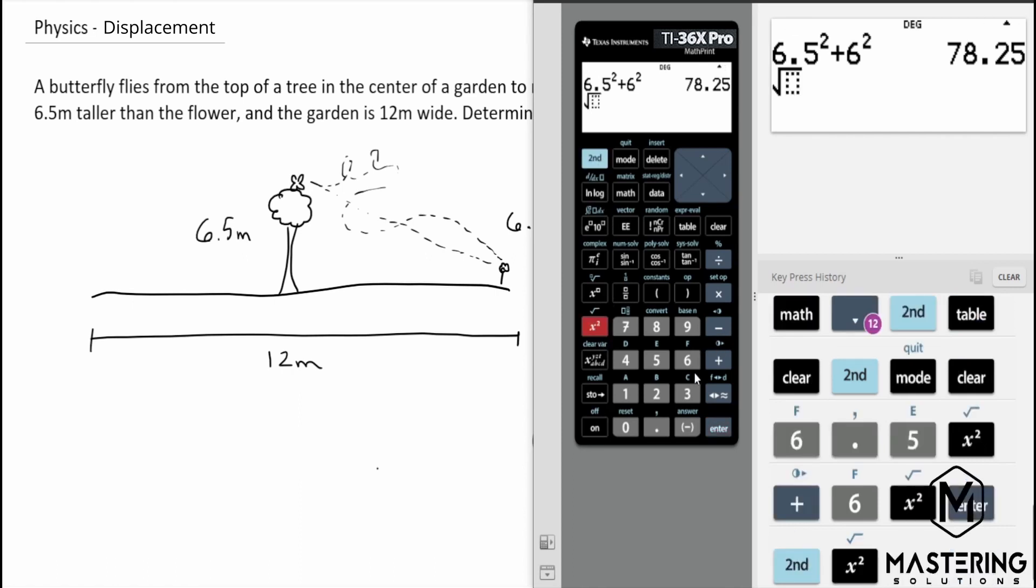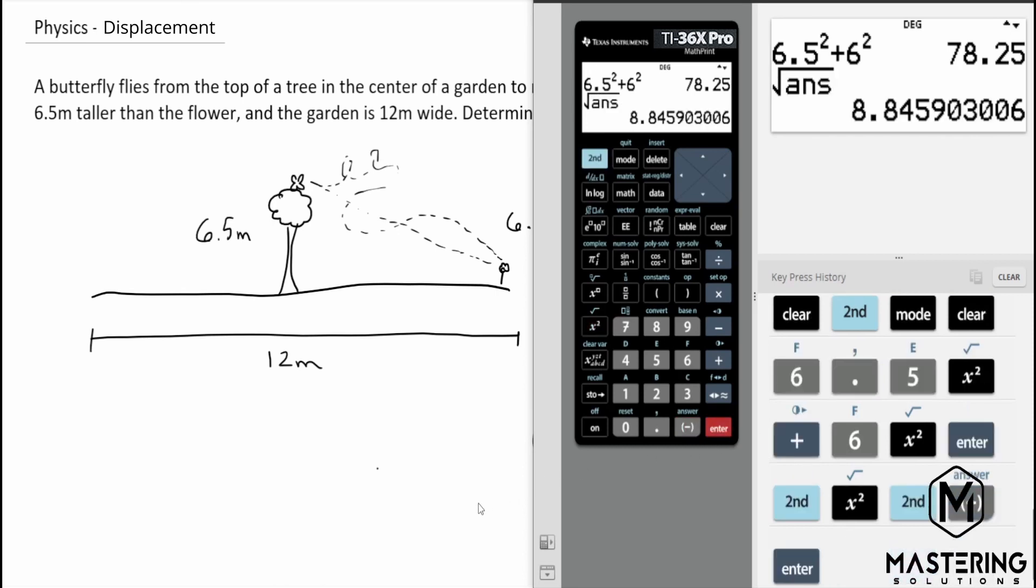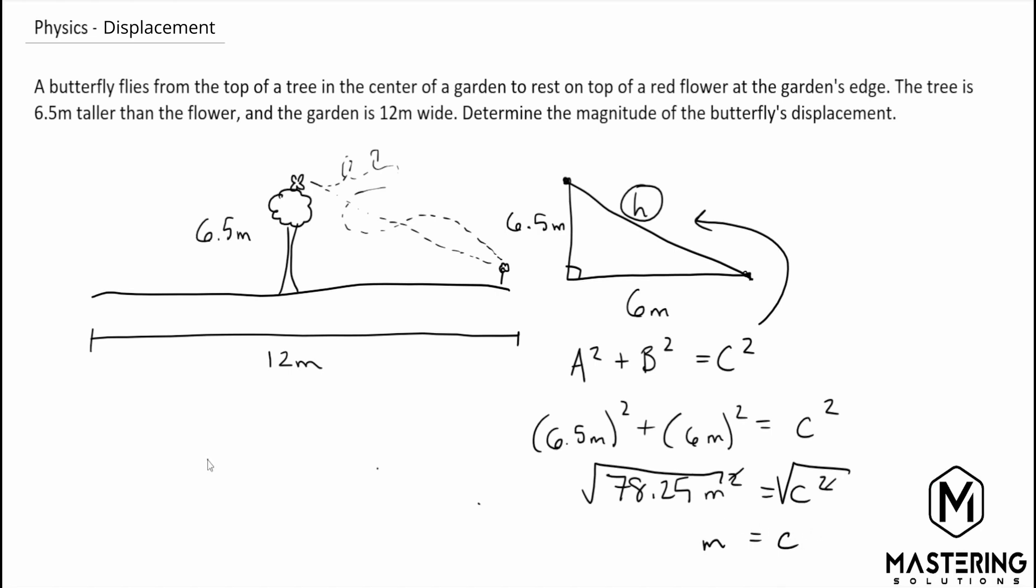the square root of that the answer is 8.845 meters or if we round c or the total displacement of the butterfly is 8.8 meters for significant figures.